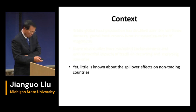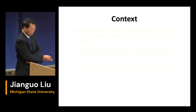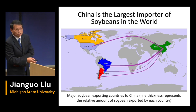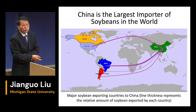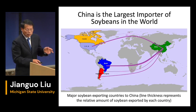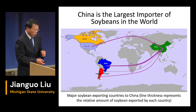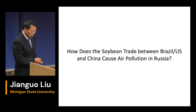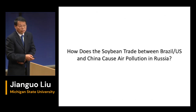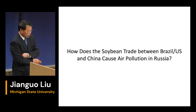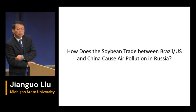As Nick mentioned, China is the largest importer of soybean in the world, importing from the U.S., Brazil, and smaller amounts from Argentina and Canada, with the U.S. and Brazil dominating. So here is a question to think about: how does the soybean trade between Brazil, the U.S., and China cause air pollution in Russia?